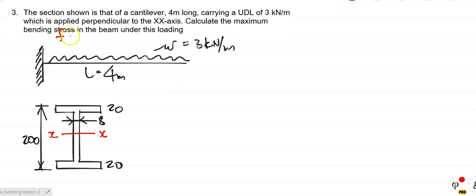Right, so it wants us to find F. State the formula, see what we got, see what we need. M over I is equal to F over Y. Right, theory of elastic bending.